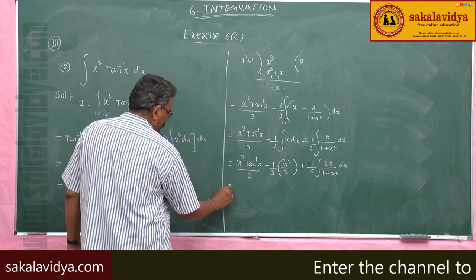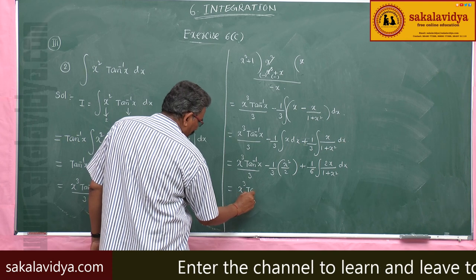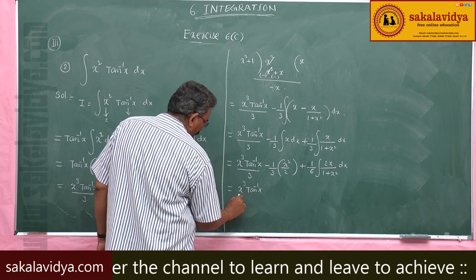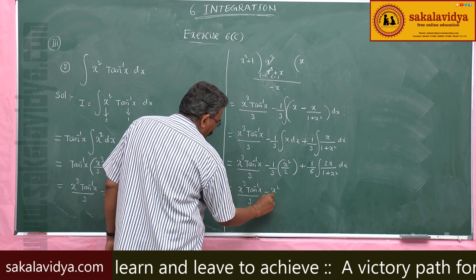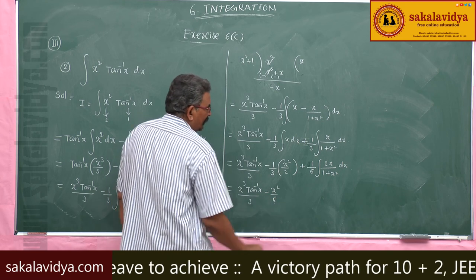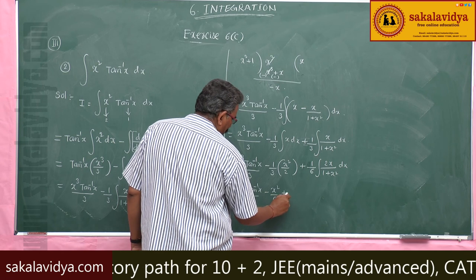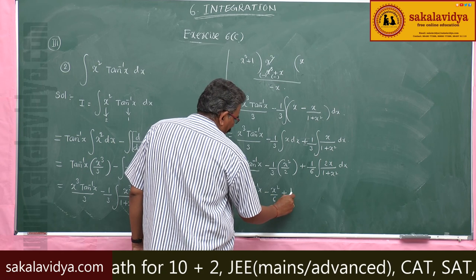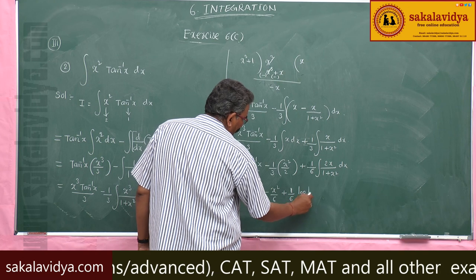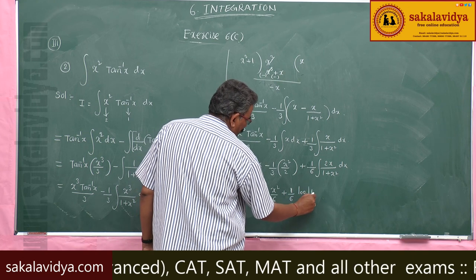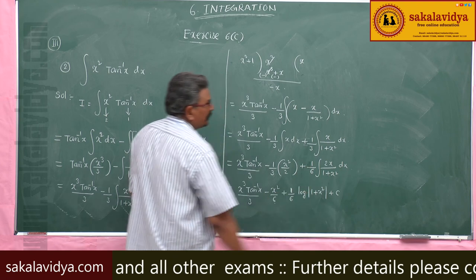This simplifies to x cubed tan inverse x by 3, minus x squared by 6. The remaining integral is of the form f'(x) by f(x) dx, so it equals 1 by 6 times log mod of f(x), that means log mod of 1 plus x squared, plus constant of integration.